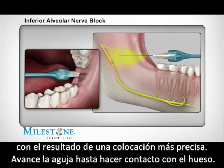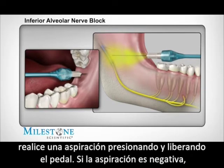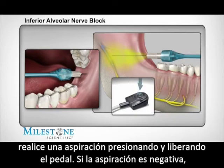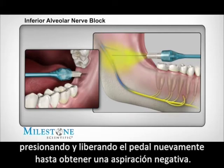Advance the needle until bone is contacted. The final target is the medial aspect of the ramus. Once at your target site, perform an aspiration by depressing and releasing the foot control. If the aspiration is negative, continue the injection. If aspiration is positive, reposition the needle and repeat aspiration by depressing and releasing the foot control pedal again until a negative aspiration is obtained.